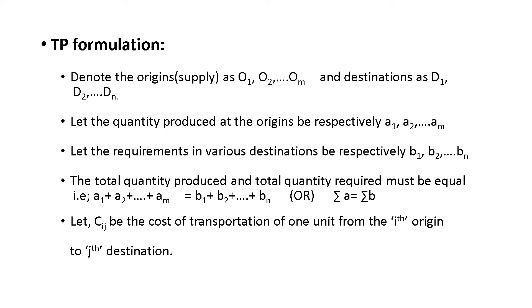Now let's look at the transportation problem formulation. It is denoted by origins O1, O2, ..., Om and destinations D1, D2, ..., DN. That is the source and the destination.